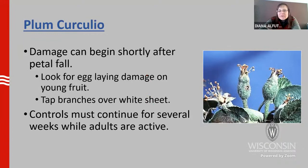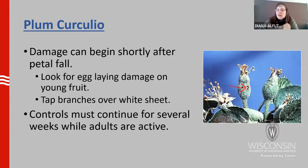The damage can begin shortly after petal fall. You can see on the fruit here on the side there's already plum curculio damage and the fruit is barely starting to swell — the petals have just fallen off. In order to know if you have plum curculio and need to do some kind of control, you want to start looking at the tiny apples right away. Look for those egg-laying scars. You can also put a white sheet down on the ground and tap the branches — these little weevils will fall out onto the sheet and you can monitor that you have them. Those adults will be active for several weeks, so you'll probably need to do a couple of sprays to kill those adults.